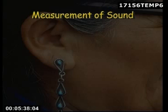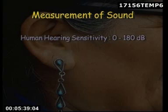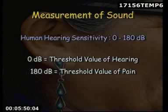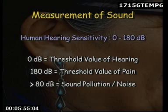The human ear is sensitive to 0 to 180 decibels of sound, in which 0 decibels is referred to as the threshold of hearing while 180 decibels is the threshold of pain. Sound of more than 80 decibels intensity is considered a pollutant.